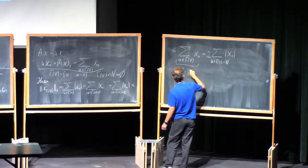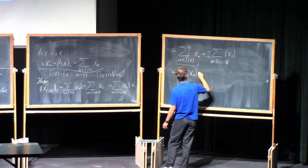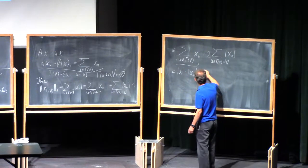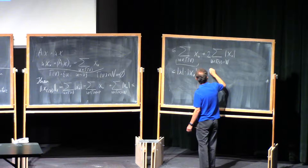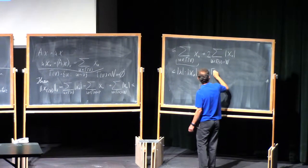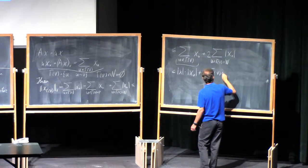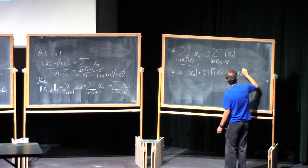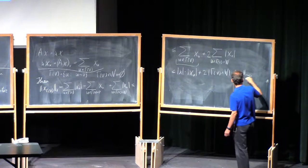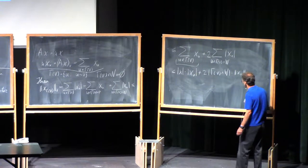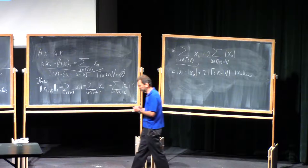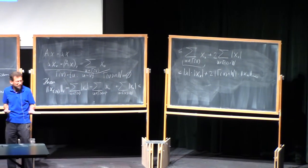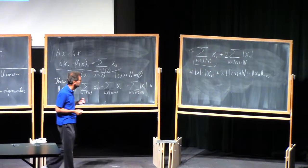...of lambda times absolute value of x_v plus twice the cardinality of gamma(v) intersected with w, times the norm of x_u infinity. And here we are going to use delocalization — actually two types of delocalization at the same time: L∞ and no-gaps.